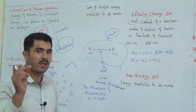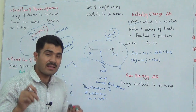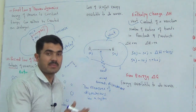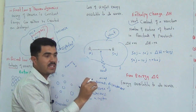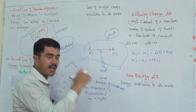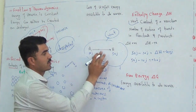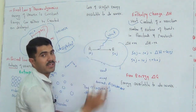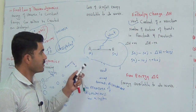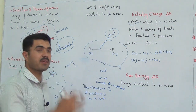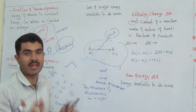Spontaneous reactions are those reactions which occur by themselves. Spontaneous reactions always happen by the release of energy or heat. If a reaction releases heat or energy, that reaction will be spontaneous. If a reaction is not able to release energy, it will never be spontaneous — it needs energy from outside, making it non-spontaneous.